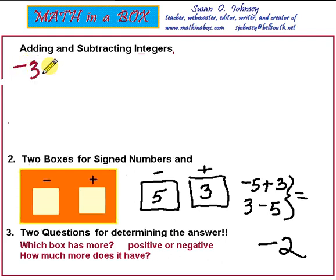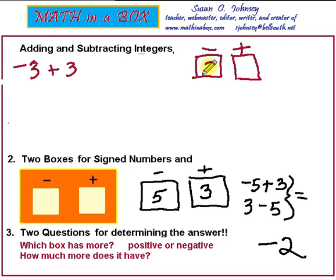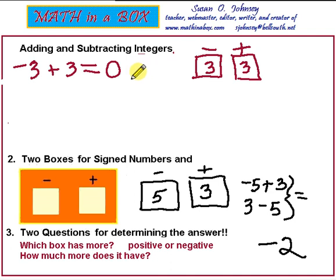Now let's look at expressions where you would have the same amount in each box — for example, negative 3 plus 3. If you draw your boxes, you will see a 3 in the negative box and a 3 in the positive box. What is our answer when one box doesn't have more than the other? The answer to these types of problems is always 0. If you rewrite this as 3 minus 3, you'll recognize this as a basic problem: 3 take away 3 is 0.